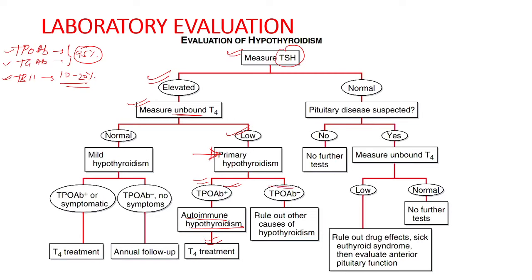If TPO antibodies are negative, other causes of hypothyroidism such as iatrogenic causes or iodine deficiency must be ruled out. If free T4 is normal with elevated TSH, this is subclinical hypothyroidism. Again, TPO antibodies are tested: if the patient has antibodies or is symptomatic, levothyroxine is started. If antibodies are absent and the patient is asymptomatic, annual follow-up of thyroid functions is recommended.